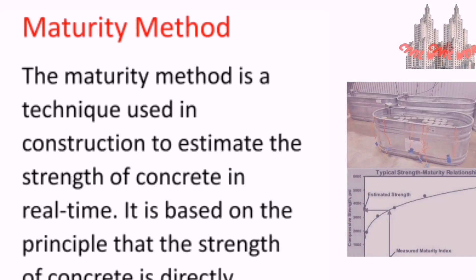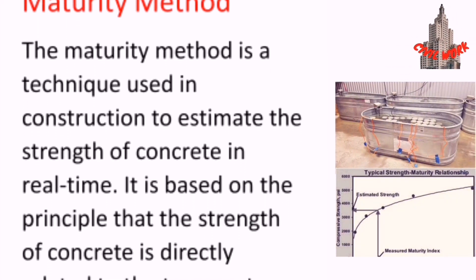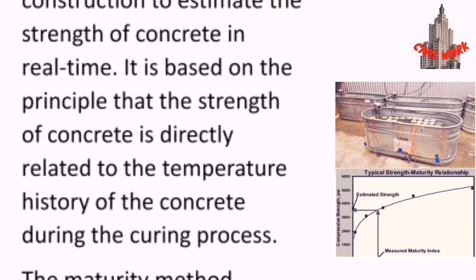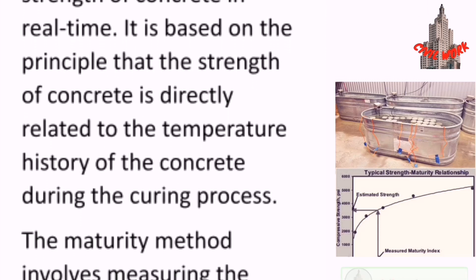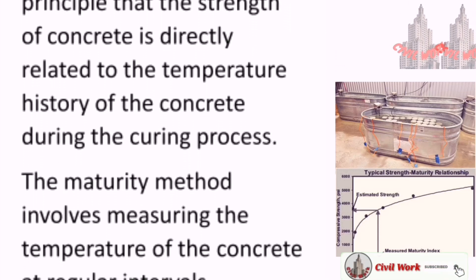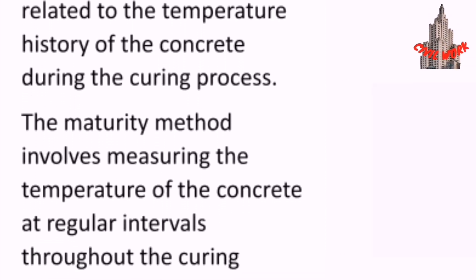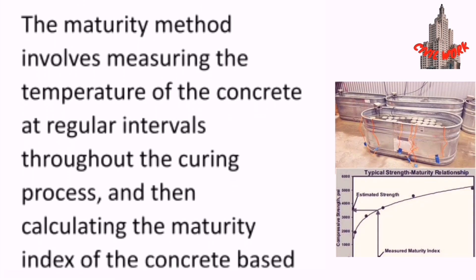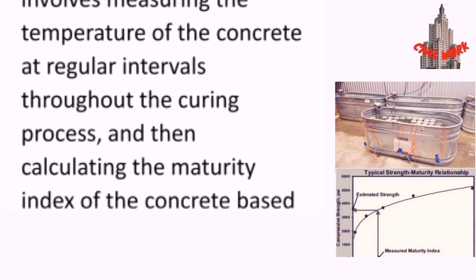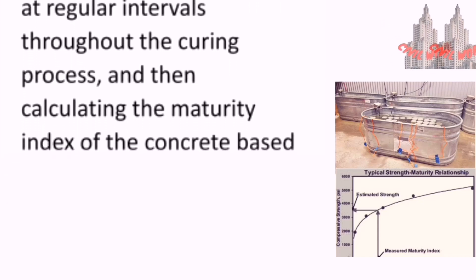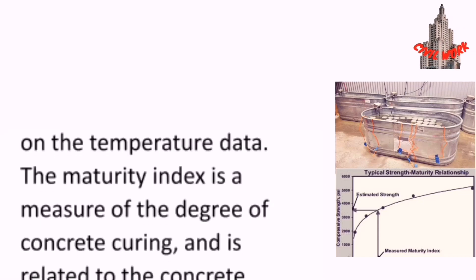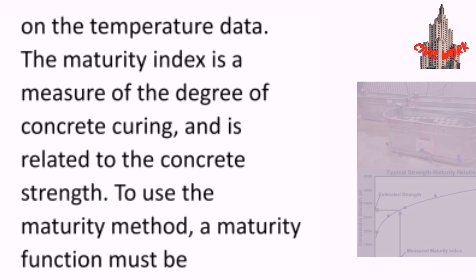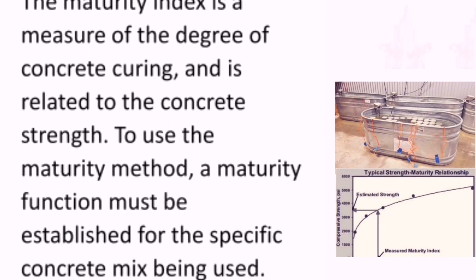Maturity method. The maturity method is a technique used in construction to estimate the strength of concrete in real time. It is based on the principle that the strength of concrete is directly related to the temperature history of the concrete during the curing process. The maturity index is a measure of the degree of concrete curing and is related to the concrete strength.